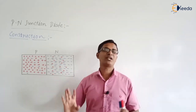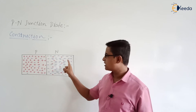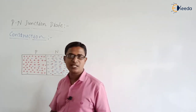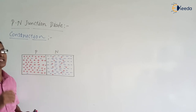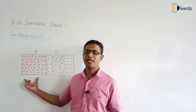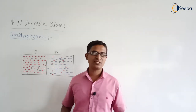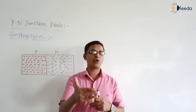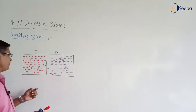Now we have two different materials. At one side, there are a large number of positive charge carriers and very small number of negative charge carriers. At the second side, there are large number of negative charge carriers and very small number of positive charge carriers. Can we say that the density of positive charges in the P-type material is very high? The density is nothing but the number of charges divided by the volume of that layer.